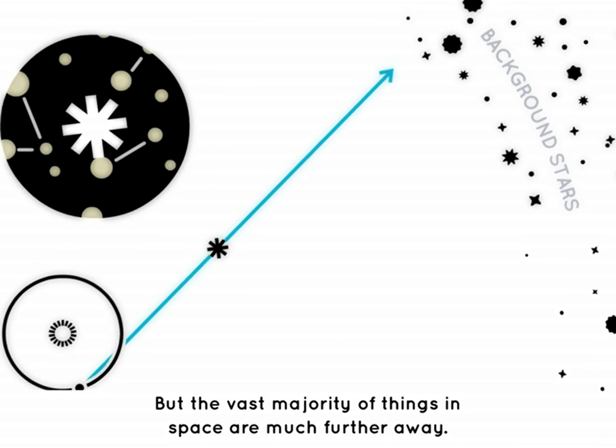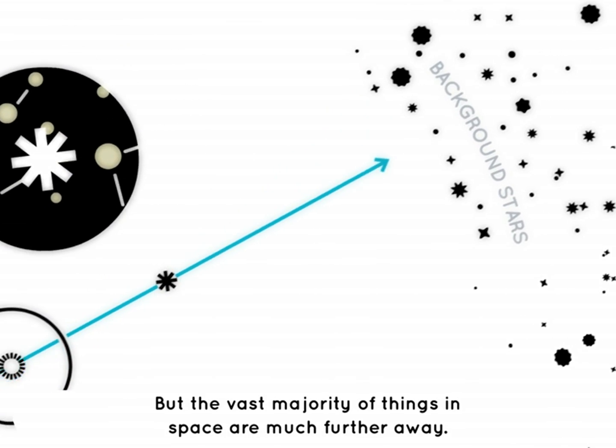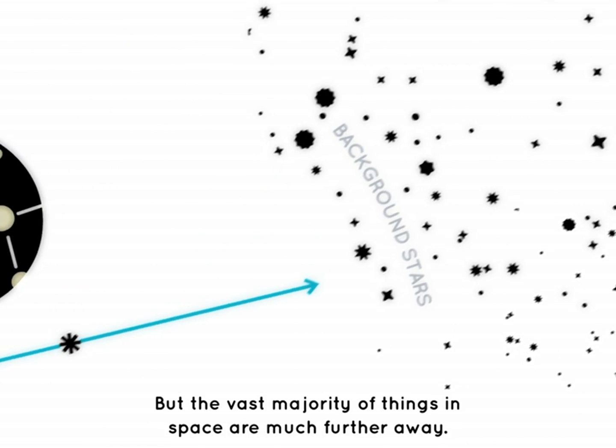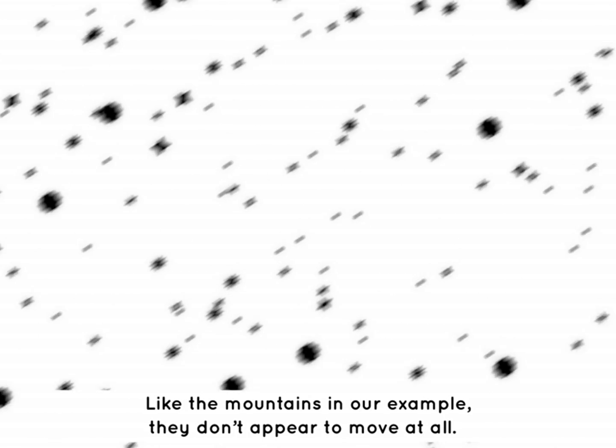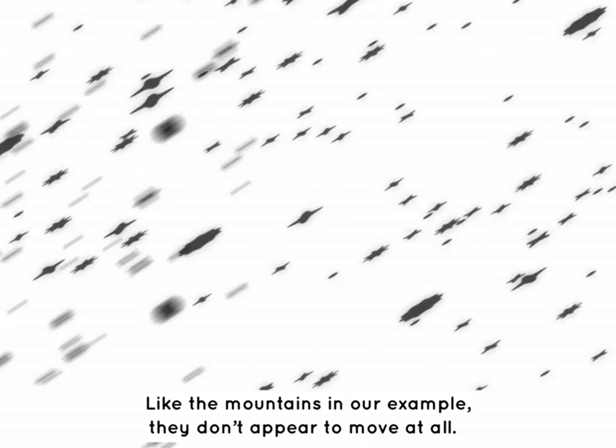But the vast majority of things in space are much further away. Like the mountains in our example, they don't appear to move at all. So how do we know how far away they are?